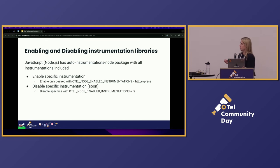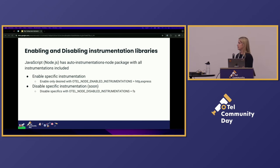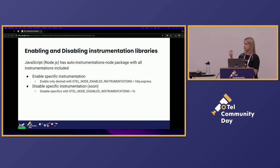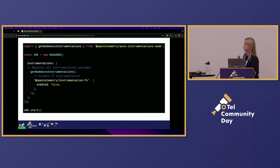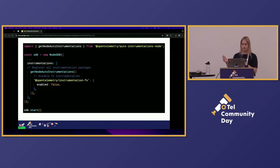We'll have a similar thing with JavaScript. There is an auto-instrumentations-node package that has all instrumentations available for OpenTelemetry from JS Contrib. It has environment variable options to either enable specific instrumentation options you want, or disable one instrumentation at a time. For example, you may want to disable the FS instrumentation — this is one of your options for doing it in JavaScript if you're configuring in code as opposed to just environment variables.